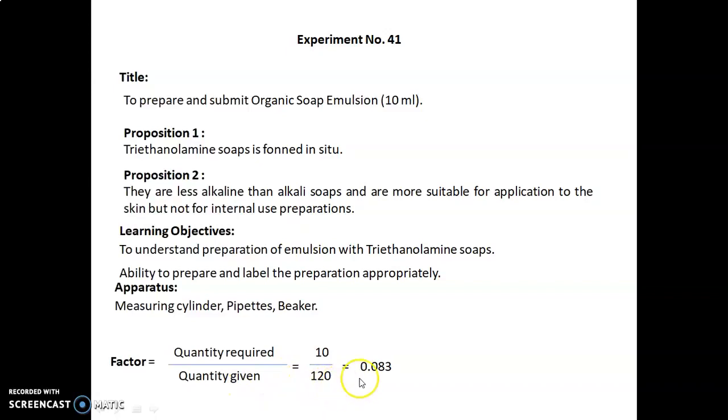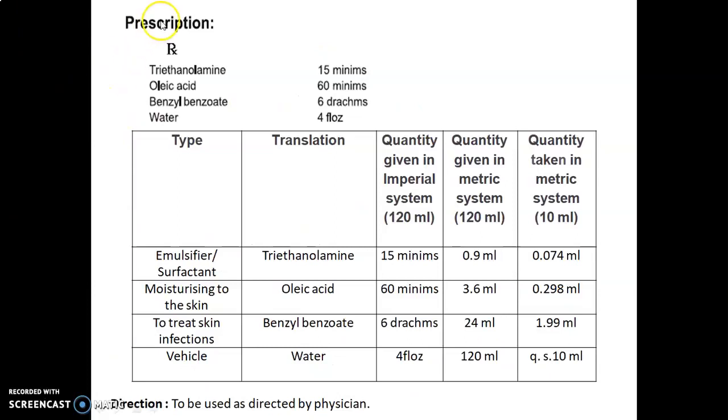The prescription is denoted by the symbol Rx, given in Latin terminologies. The formula table includes type (category/use/role of ingredient), translation (name of ingredient), quantity given in imperial system for preparing 120 ml, quantity given in metric system to prepare 120 ml, and quantity taken in metric system to prepare up to 10 ml. First ingredient: triethanolamine used as emulsifier or surfactant.